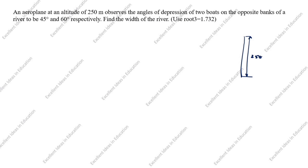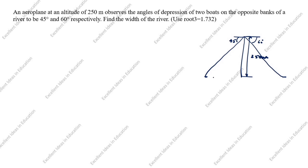The aeroplane observes the angle of depression of two boats — depression means the line comes down only — on the opposite banks of a river. So two boats are there: one boat is here and another boat is here. The depression line comes down only. The angles are 45 degrees and 60 degrees respectively.